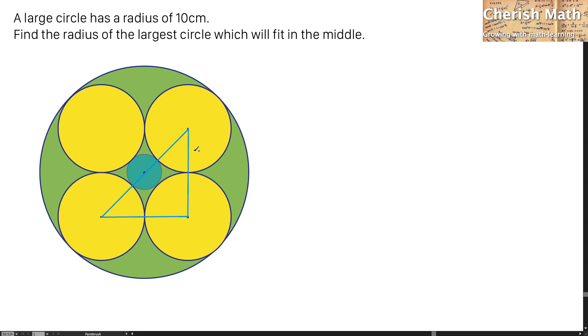I'm going to use R to label as the radius of the yellow circles. Here it goes. I'm going to label a bit more. This is L stands for the center of the yellow circle located at the bottom left. And this is M for the top right of the yellow circle.